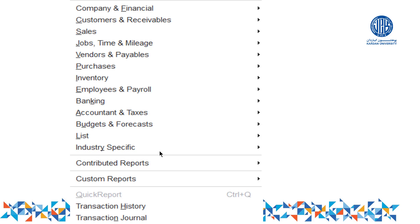When we say accounting information system, it doesn't mean there must always be a computerized system. Even manually, we can provide information about purchases — how much was purchased, how much is paid, how much is outstanding, how much inventory we have, how much we sold, how much we received, how much we still need to receive. All of this is the kind of information provided through accounting information system.